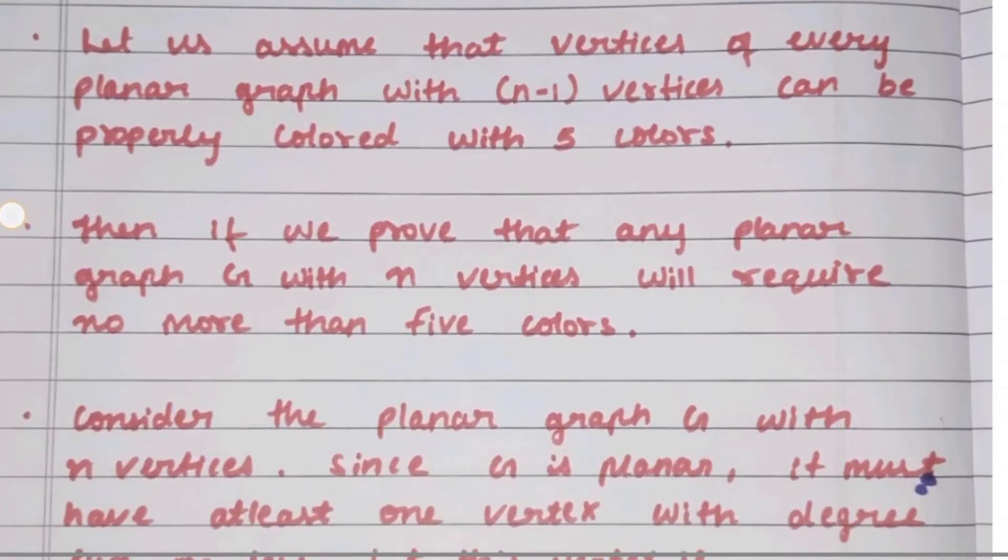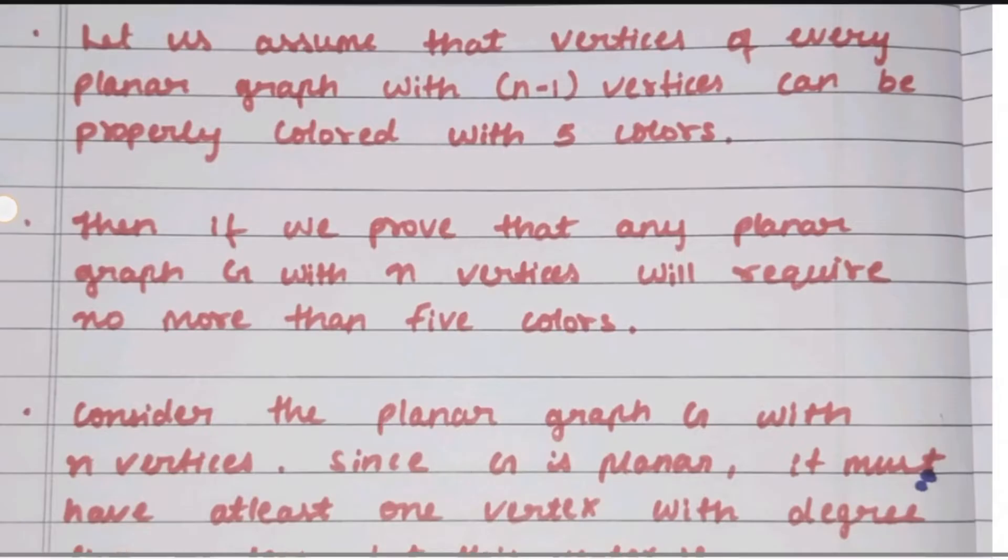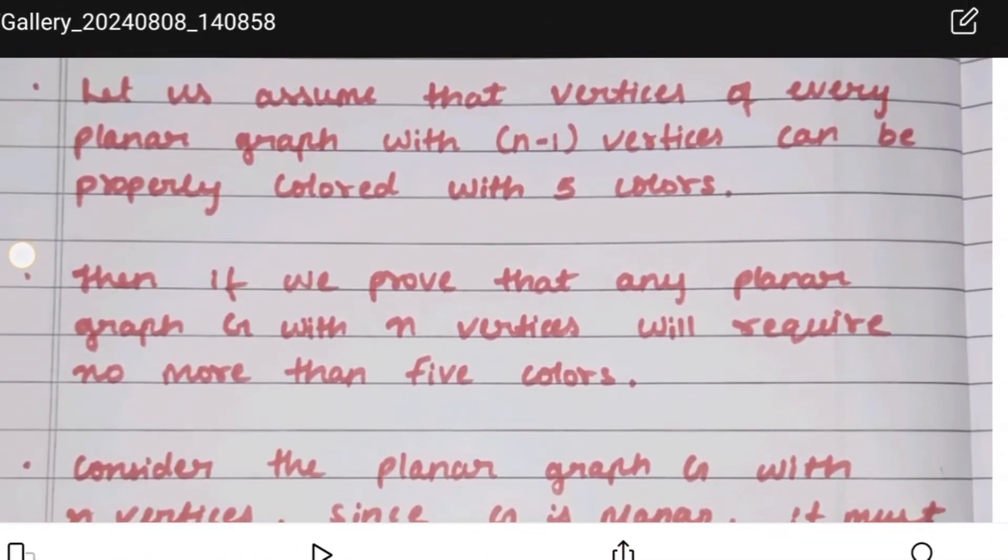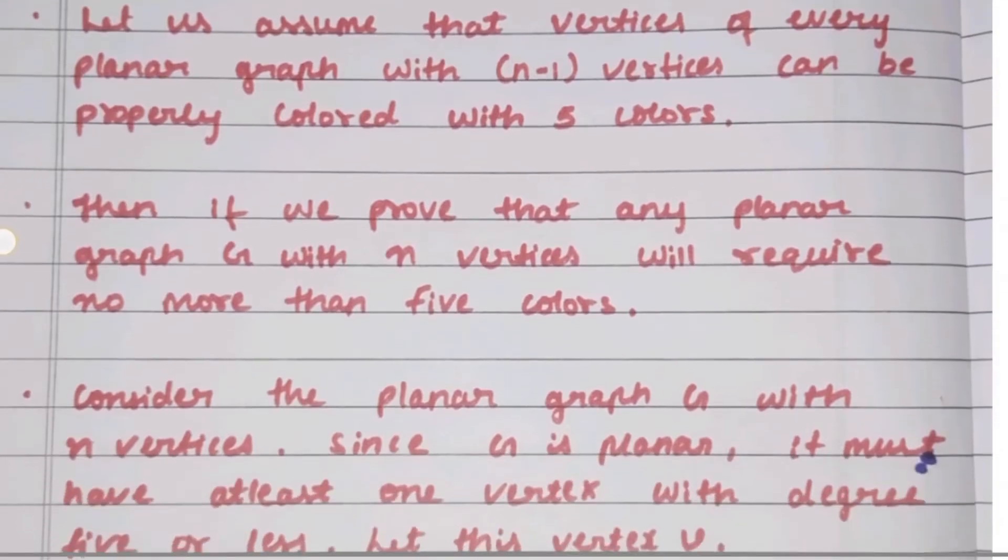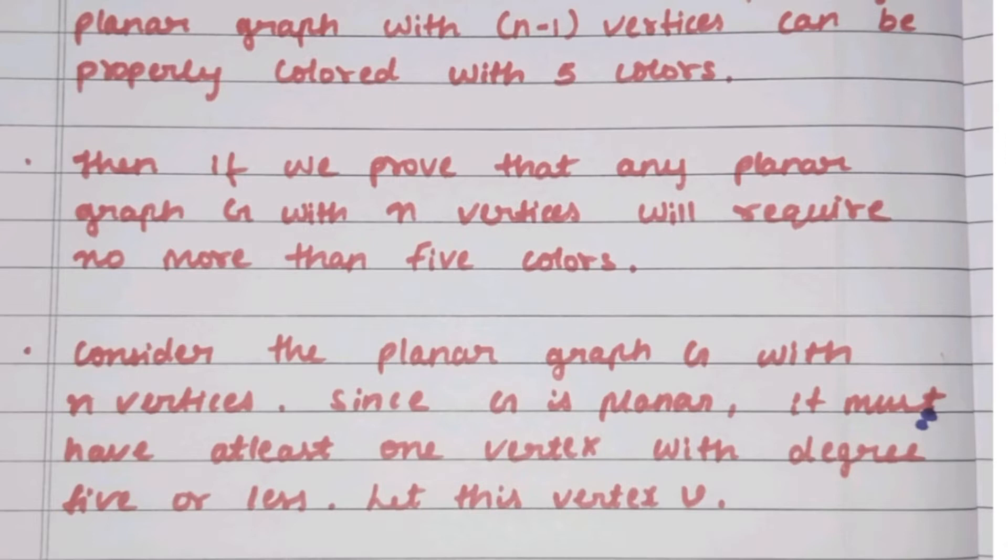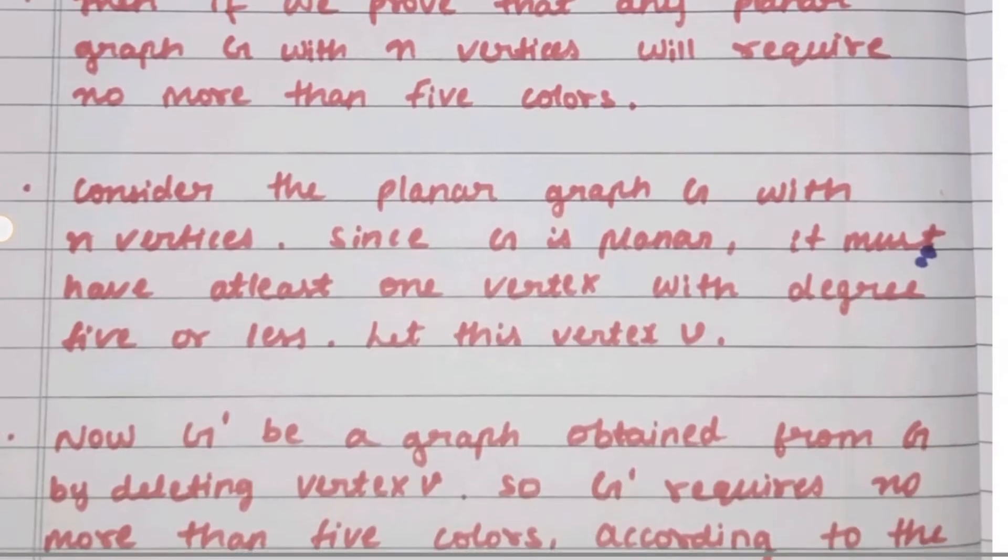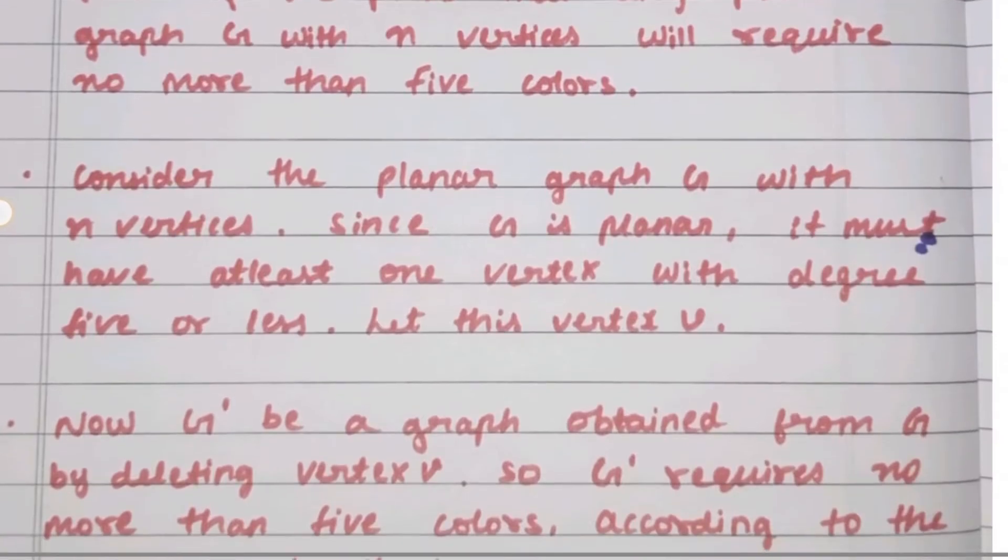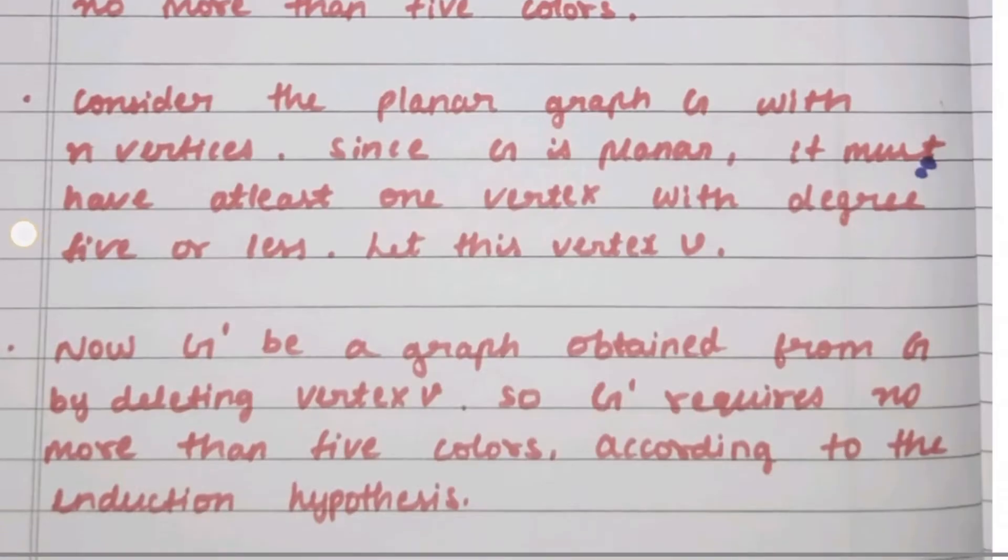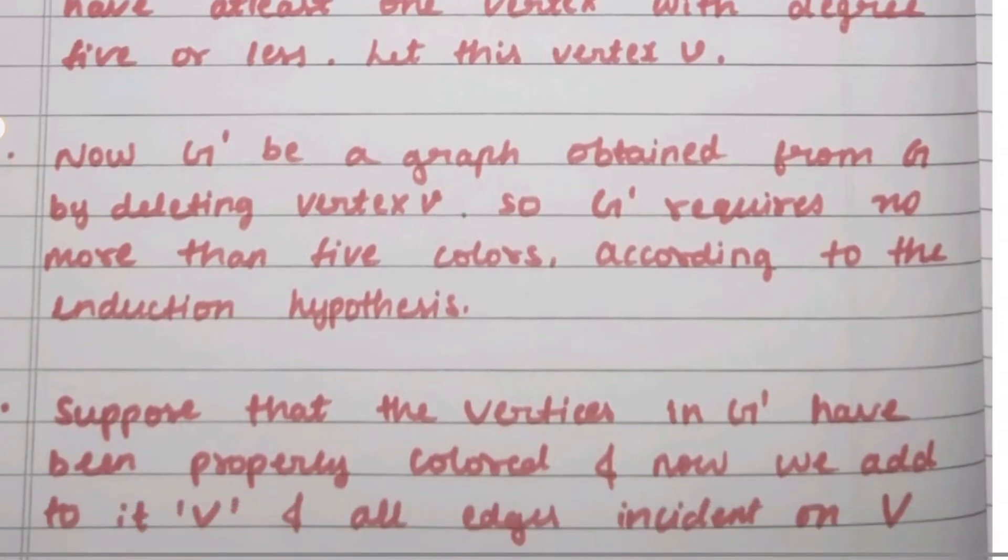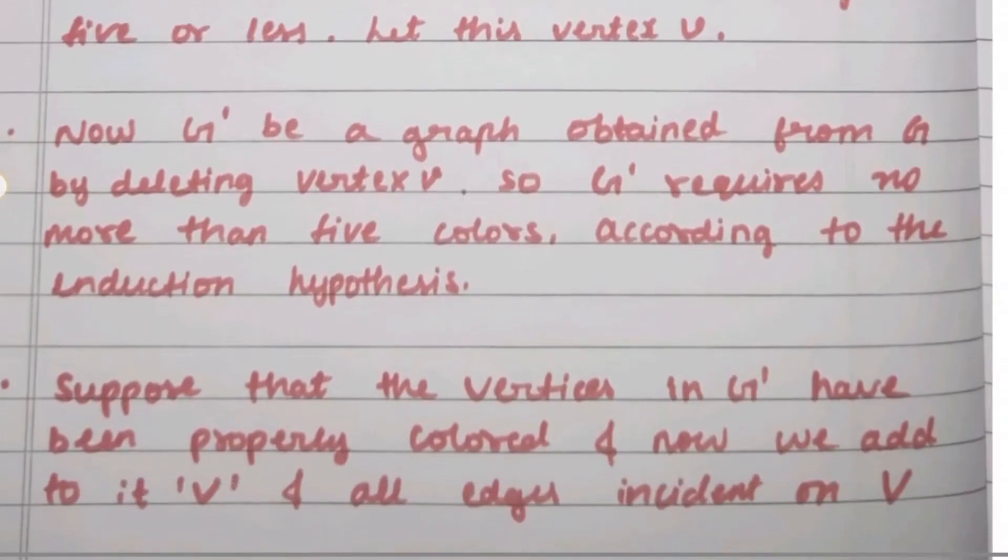Now consider a planar graph G with n vertices. Since G is planar, it must have at least one vertex with degree 5 or less. Let this vertex be V. Let G' be the graph obtained from G by deleting vertex V. So G' requires no more than 5 colors according to the induction hypothesis.